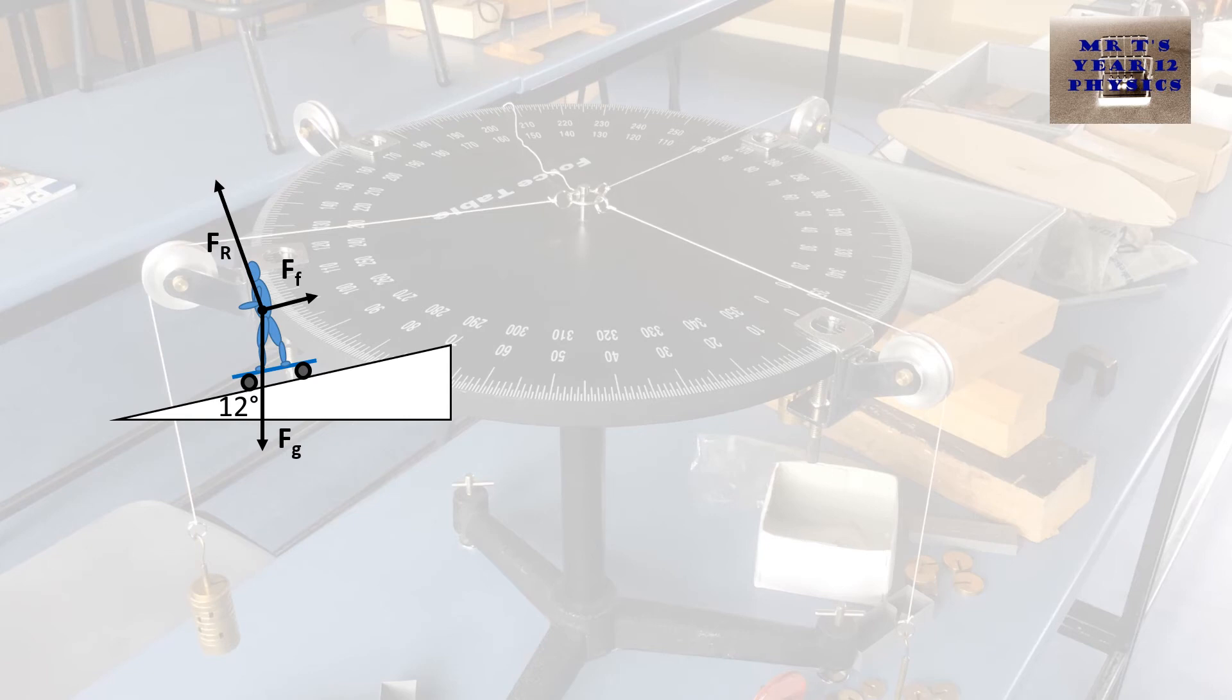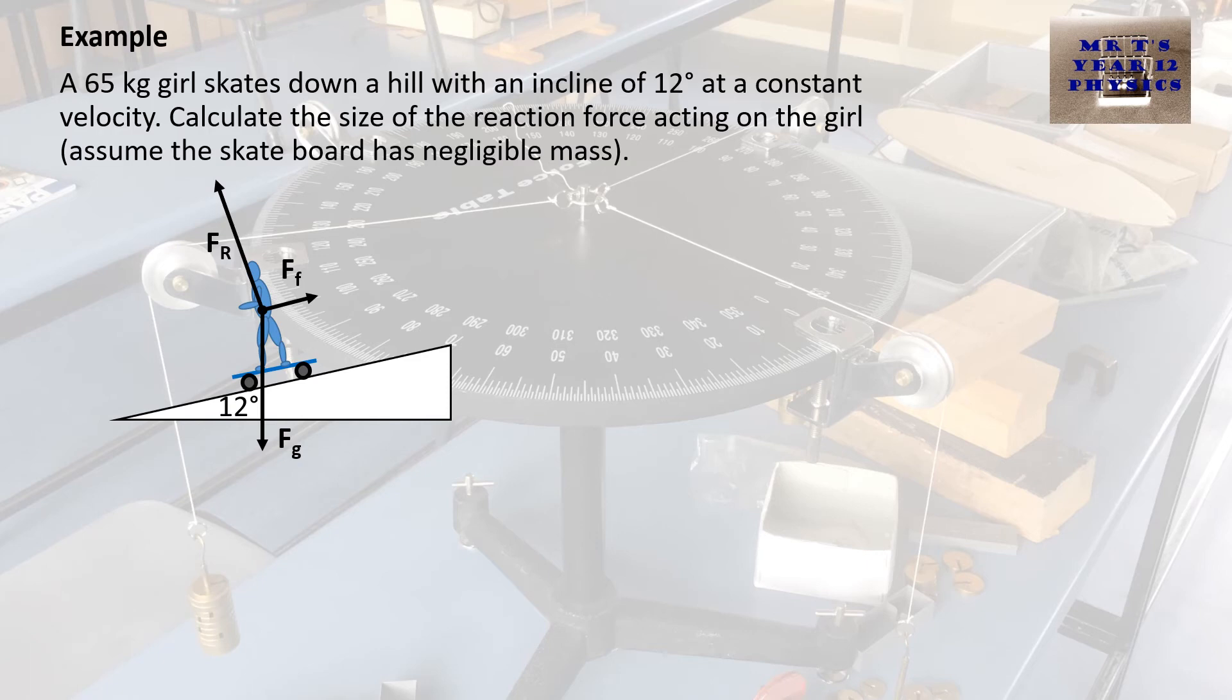Let's look at another. Here's the next example. In this example, we've got a 65 kilogram girl on a skateboard. She's going downhill with an incline of 12 degrees at a constant velocity. Remember, constant velocity means the forces must all be balanced, so when we draw them in a triangle, they're going to follow tip to tail and start and end at the same place. They want to know the size of the reaction force only this time. We're going to assume that the skateboard has no mass, so we're just going to use 65 kilograms.